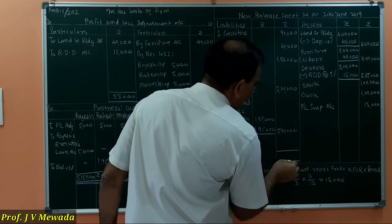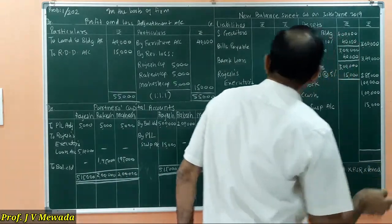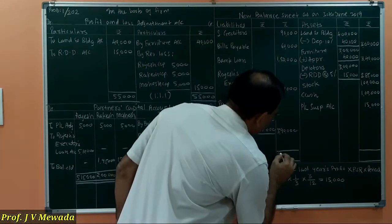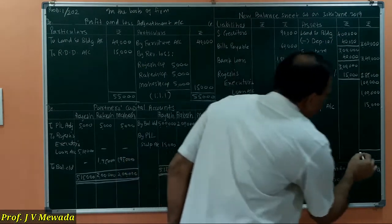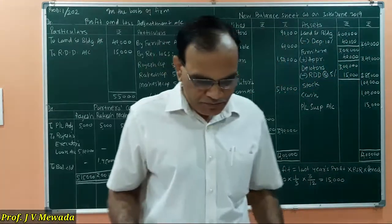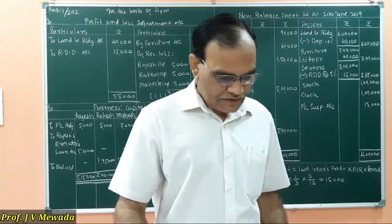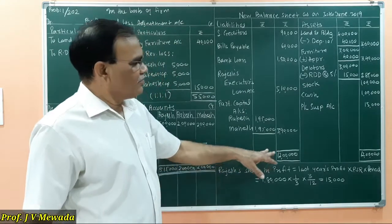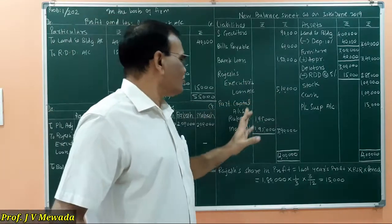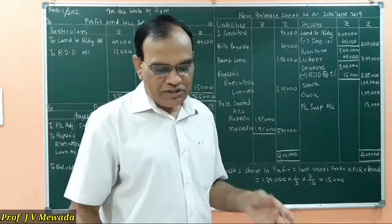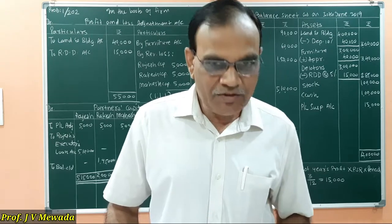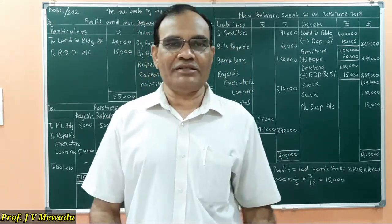We do the total of the balance sheet, which is 12 lakh rupees. Rajesh Executors' Loan Account is 5,10,000 and partners' capital left out is 3,90,000. This is the way we solve a problem on the death of a partner. You can solve this sum at home and do the practice. Thank you.